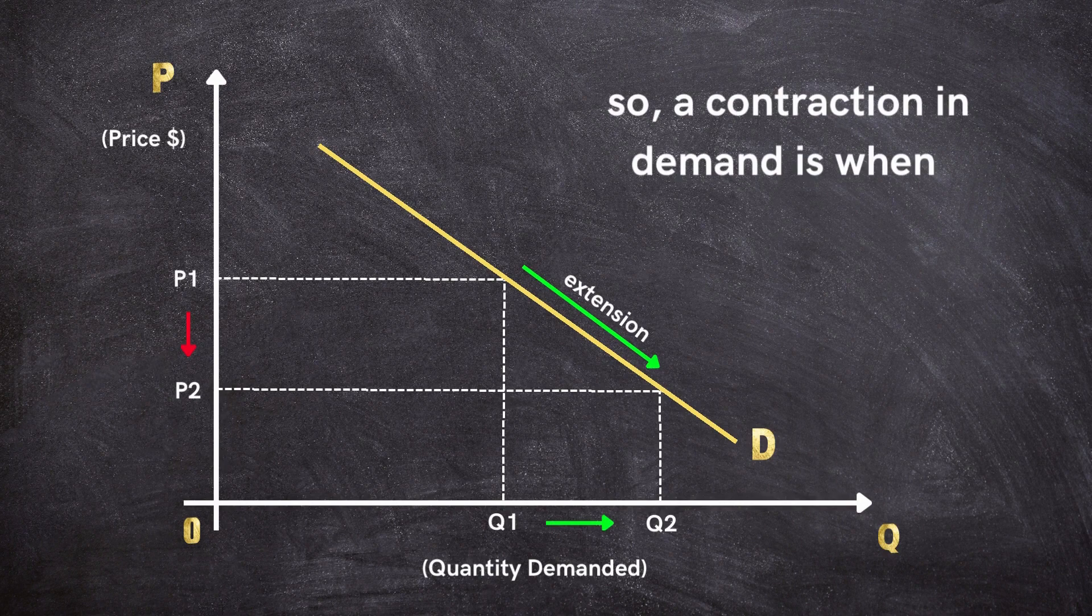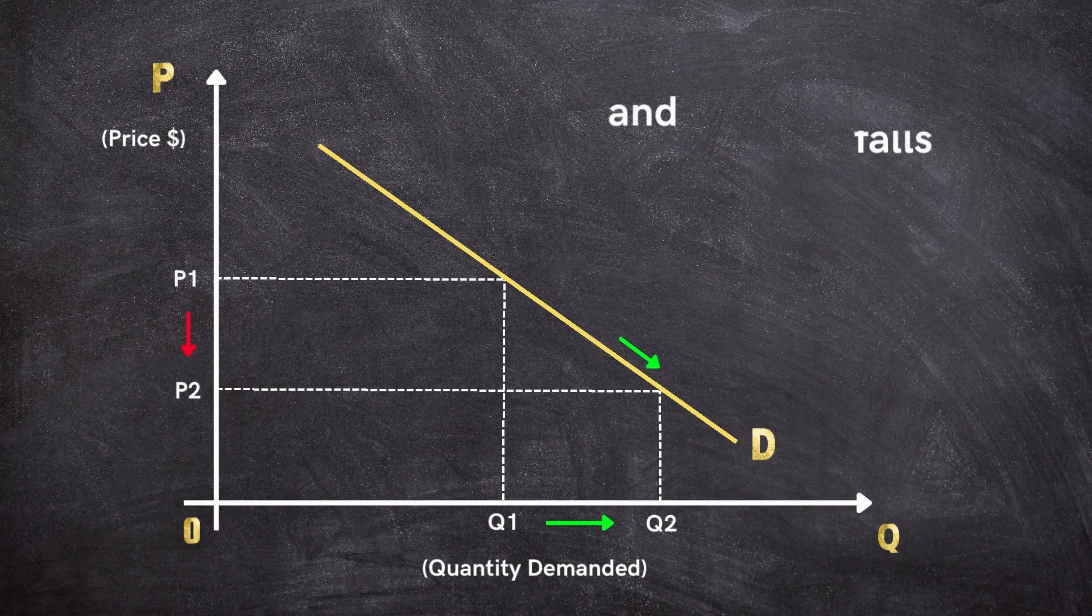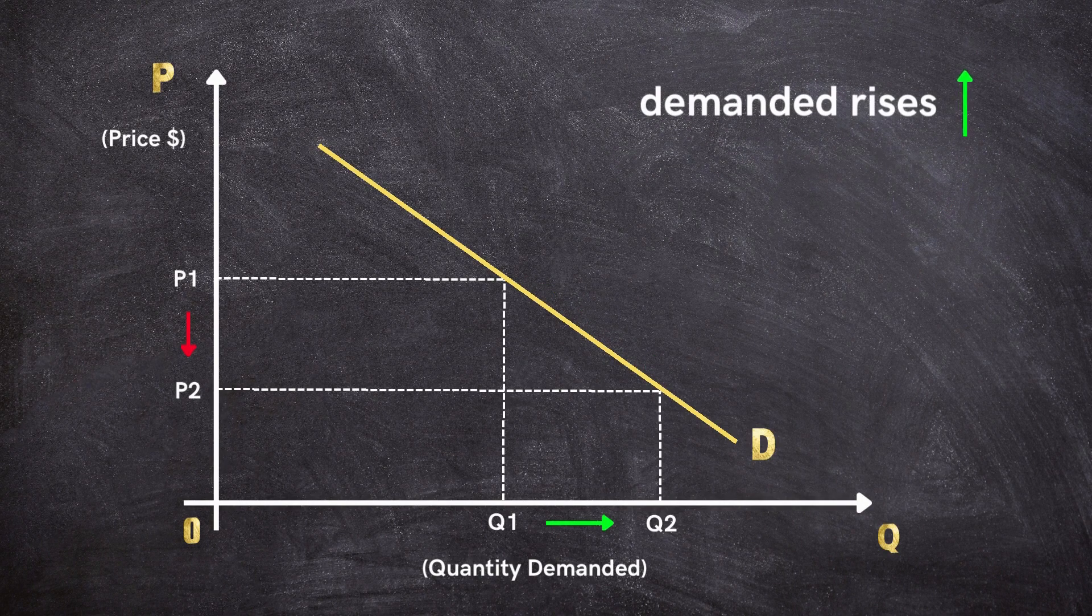So, a contraction in demand is when the quantity demanded falls, and an extension is when quantity demanded rises.